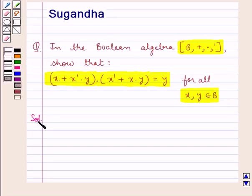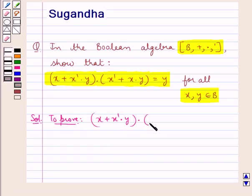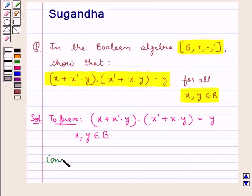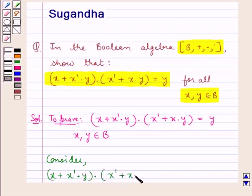Let us now proceed with the solution. We need to prove that (x + x'y)(x' + xy) = y, where x and y are elements of the set B. For this, we consider the expression (x + x'y)(x' + xy).